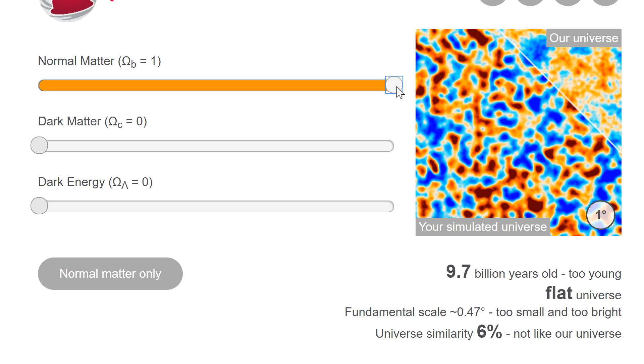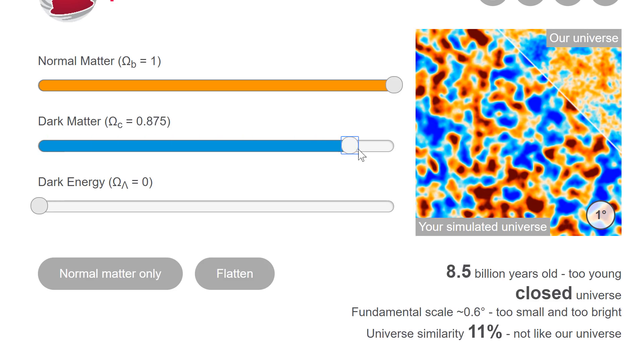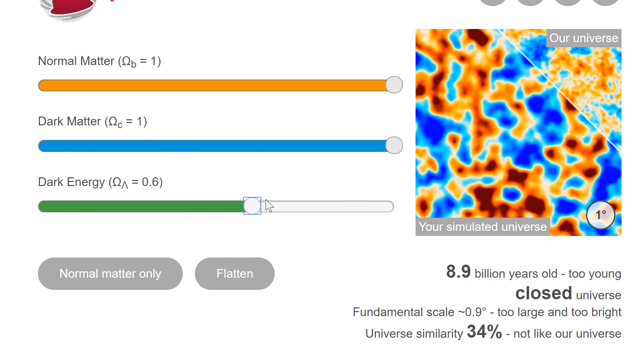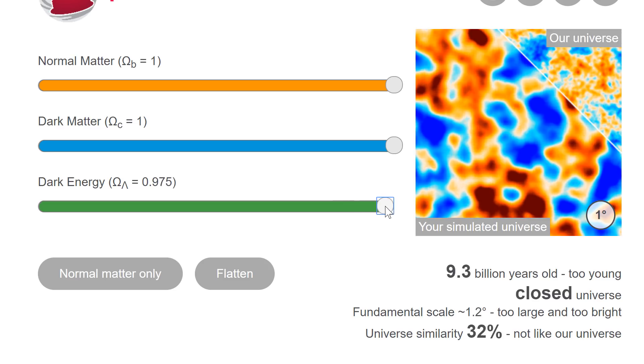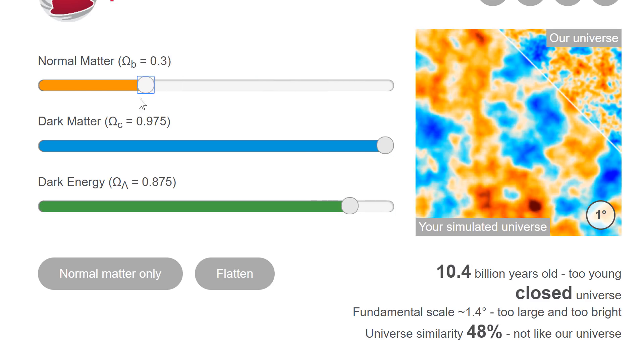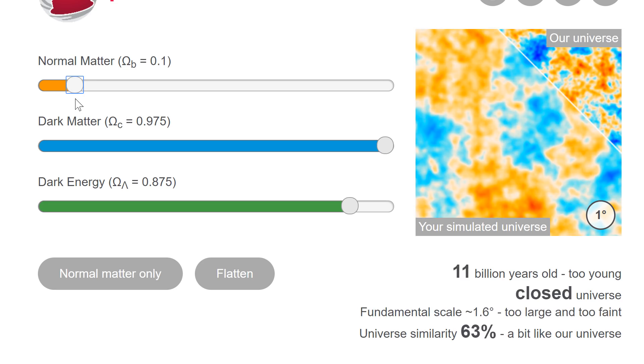However, if you start increasing dark matter, the percentage goes up as well. So here is a shape of a galaxy or a look of a galaxy that has way more dark matter. And then if you start putting dark energy in there as well, it changes the look of CMB as well. So here, we actually need to start playing around with this. And you'll see that as you decrease the number of normal matter, the percentage actually goes up.